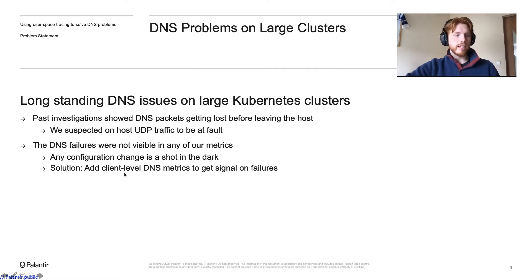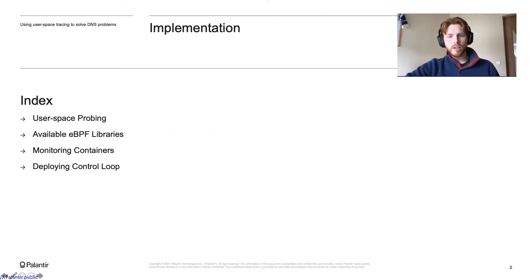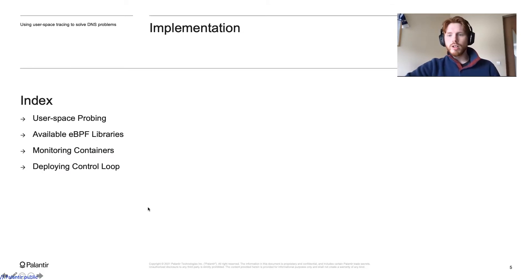The solution was adding client-level DNS metrics. Now that the problem statement is somewhat clear, let us jump into the implementation. I will aim to give you a high-level overview on what it takes to attach a Uprobe to every single container in your fleet.